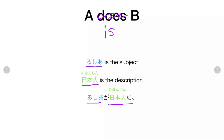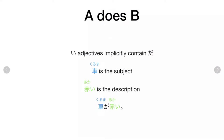Da is basically required at the end of an A is B sentence when B is a noun. However, i-adjectives — true adjectives in Japanese — implicitly contain da, so you don't need da at the end. For example, kuruma ga akai — the car is red. Akai is an i-adjective, so there's no need for da or desu at the end of this sentence.